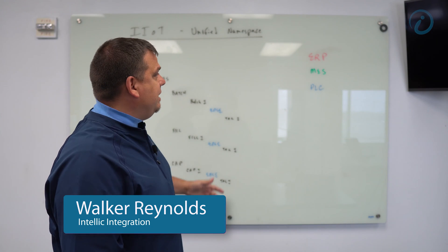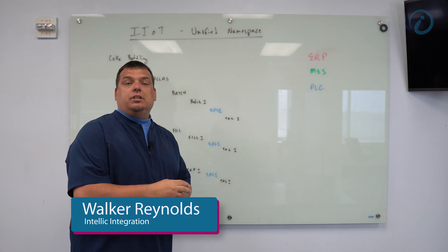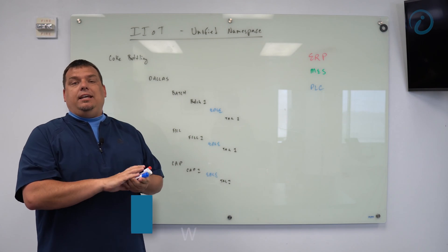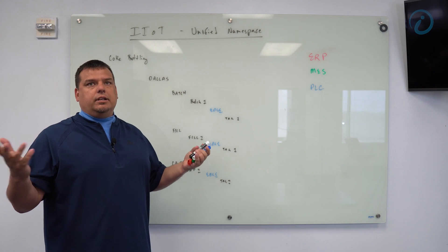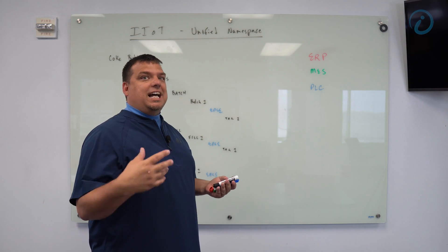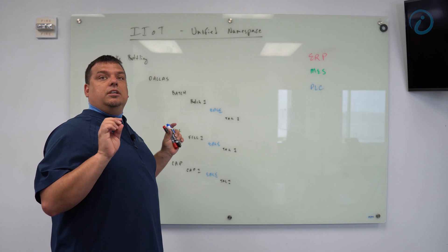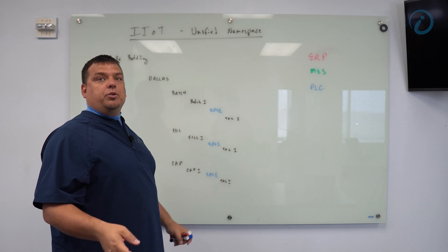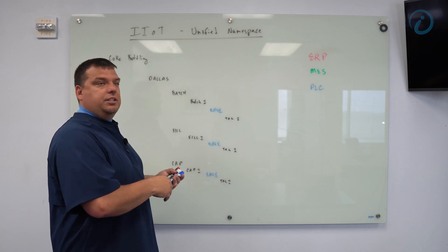In this example here, I'm going to give you an example of a unified namespace that we use when we build a data hub or unified namespace using either Ignition or Factory Studio. You don't have to use those two platforms. You can use lots of other ones, but the ones that we generally use are Ignition. This example right here, I'm going to use using Ignition. This will work for both Ignition or Factory Studio, but I'm going to talk in Ignition terms in this example.